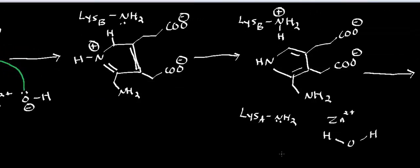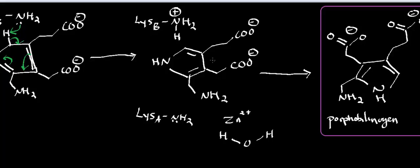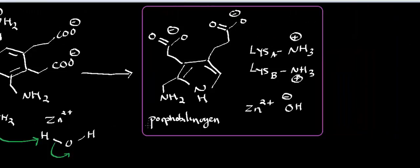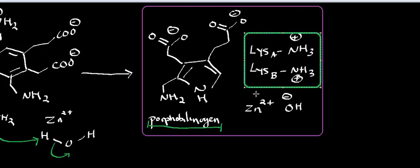Lysine B then does another proton transfer, causing a double bond rearrangement. That forces the pi electrons up as a lone pair on the nitrogen, effectively creating porphobilinogen. The last step is a proton exchange with lysine A: lysine A abstracts a proton from the water chelated to the zinc, regenerating the zinc in electrostatic interaction with hydroxide. These are our final products — porphobilinogen, which will react with porphobilinogen deaminase, a cytosolic enzyme that generates hydroxymethylbilane to continue heme synthesis — along with regenerated fully protonated lysine residues and zinc in electrostatic interaction with hydroxide.